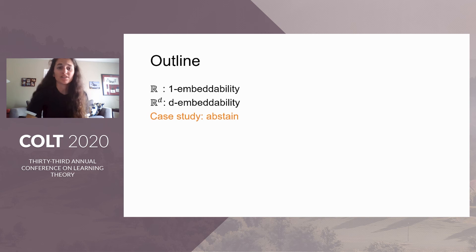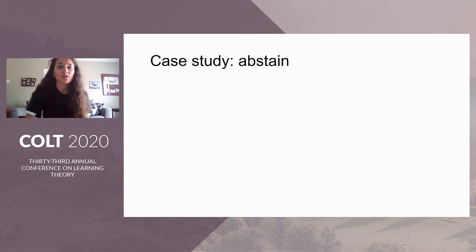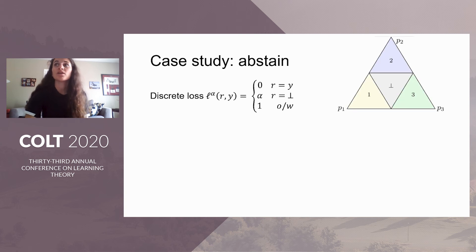Now we move into our case study for the abstain loss. As we introduced earlier, we considered the discrete loss L_alpha that takes in reports R and outcomes Y, and we assign punishment 0 if the prediction is correct, alpha if the report is to abstain, and 1 if we predict an outcome and are wrong. If we have three outcomes that we should choose from, we can say that in this case we have alpha equals one half. If the probability of any one outcome is greater than a half, then we should predict that outcome. Otherwise we should abstain, given by the middle triangle.